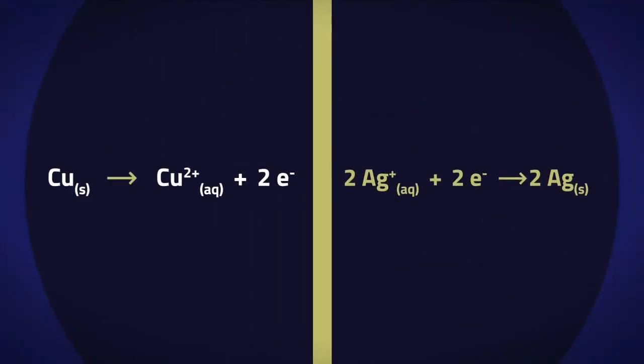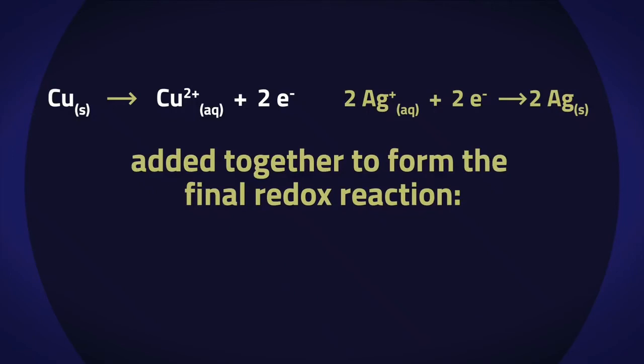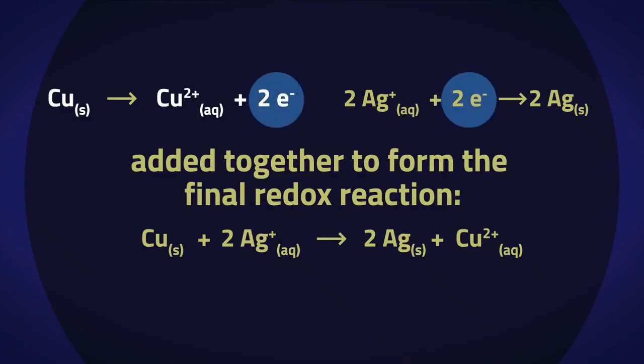When the two equations are added together to form the final redox reaction, you can see that everything, including the number of electrons, are balanced. To reform the ionic equation, the electrons are equal on each side and can be removed.